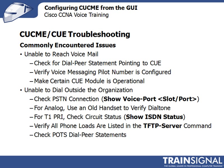Sometimes users may have a problem dialing outside the organization. Start by checking the PSTN connection. If it's a digital PRI line, make sure it's working correctly. If it's analog, you may just plug an old handset in to verify there's actually dial tone — check whether there's been a cable cut or something else. For a T1 PRI, one of the things you can do to check circuit status is use the show ISDN status command.